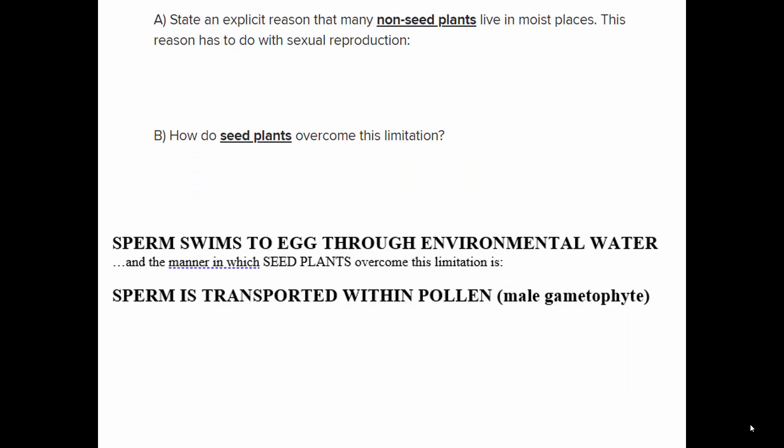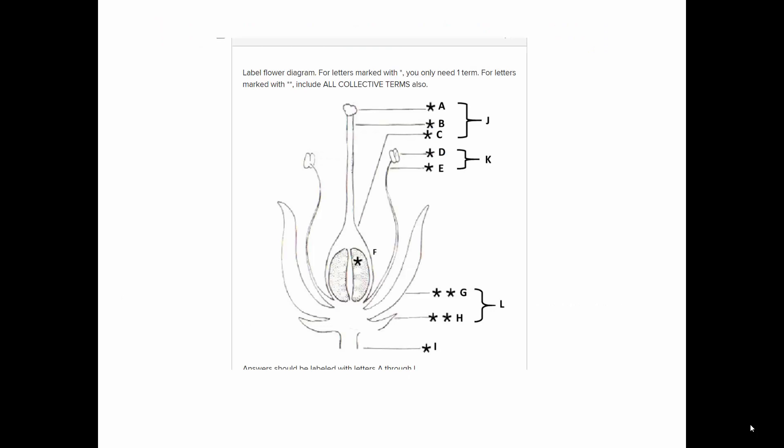In all plants other than bryophytes the dominant stage is the sporophyte. Regarding water and sexual reproduction: in non-seed plants, the sperm needs to swim through environmental water to reach the egg, unlike seed plants where the sperm is contained within a pollen grain carried by wind or animal vectors.